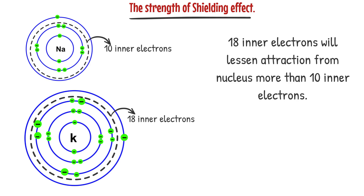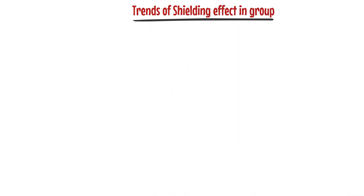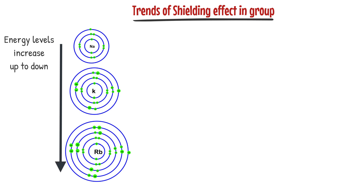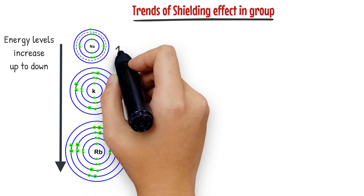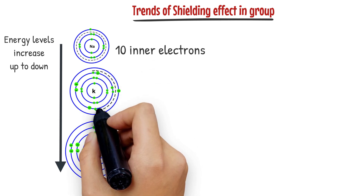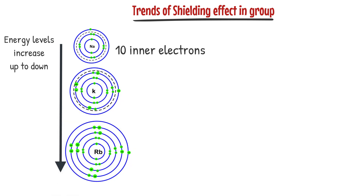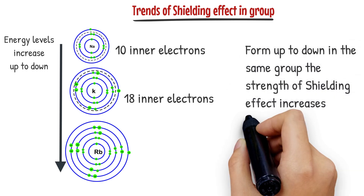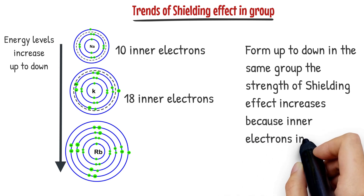Trends of shielding effect. Consider these elements from group 1, from sodium to rubidium. From top to bottom in the same group, the number of energy levels increases and the number of inner electrons also increases. As the number of inner electrons increases, the strength of shielding effect also increases.